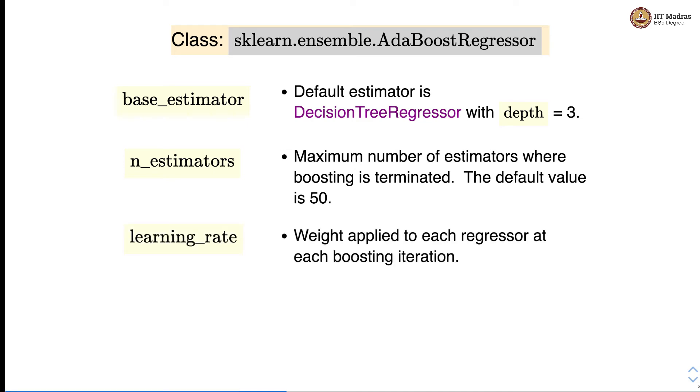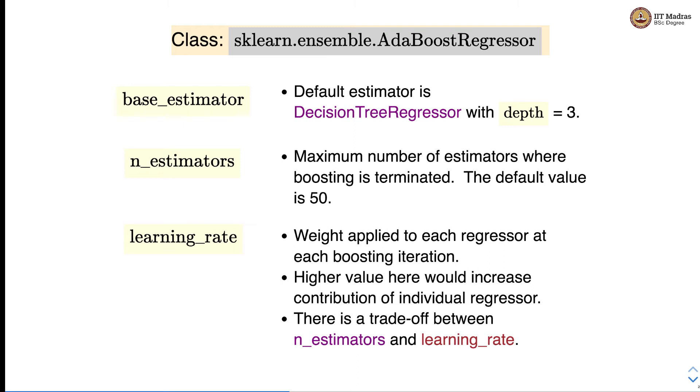Then learning rate which is weight applied to each regressor. High value here will increase contribution of individual regressor and there's a trade-off between n_estimators and learning rate.